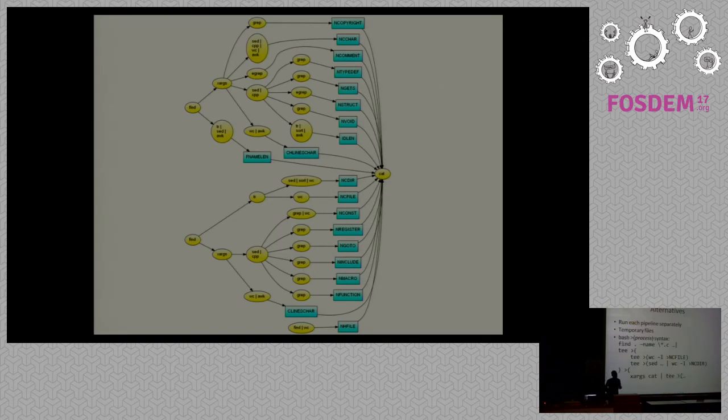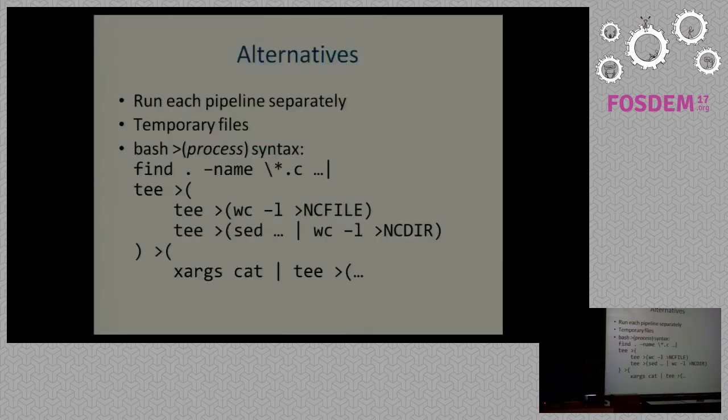There are a number of alternatives, but I didn't find any of them particularly satisfactory. So one of them is to run each pipeline separately. But this is inefficient, because some parts of the processing get repeated. Another thing is to use temporary files, store something and then reuse it. This is awful, because you have to touch the disk, and the performance is very damaging. Bash offers us a syntax to do that, where we can send out the output to a process, and we can use T to simulate those processes as files. But this quickly gets ugly. Also, it fans out, but you cannot fan in again the results. So this is limiting.